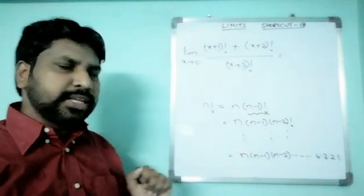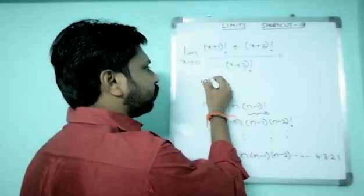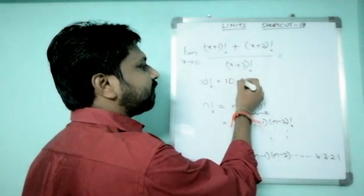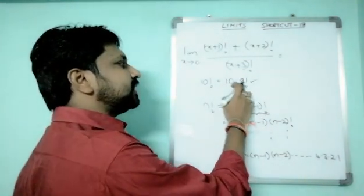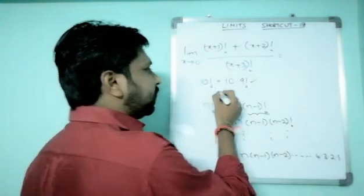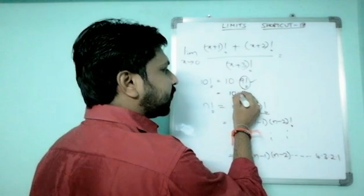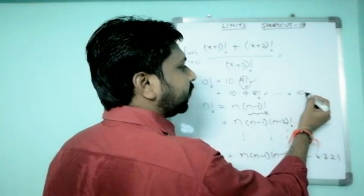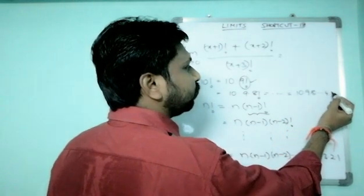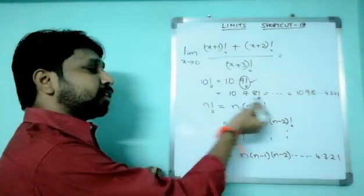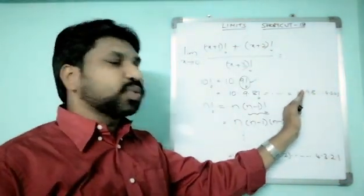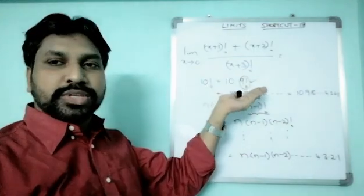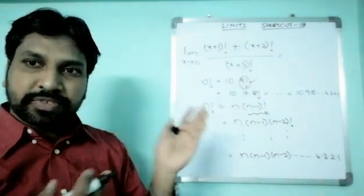So n factorial can be written as 1 × 2 × 3 × 4 × ... × n. For example, 10 factorial can be written as 10 × 9!, and 9! = 9 × 8!, continuing as 10 × 9 × 8 × ... × 3 × 2 × 1. That's the concept we'll use to evaluate these kinds of sums very easily.